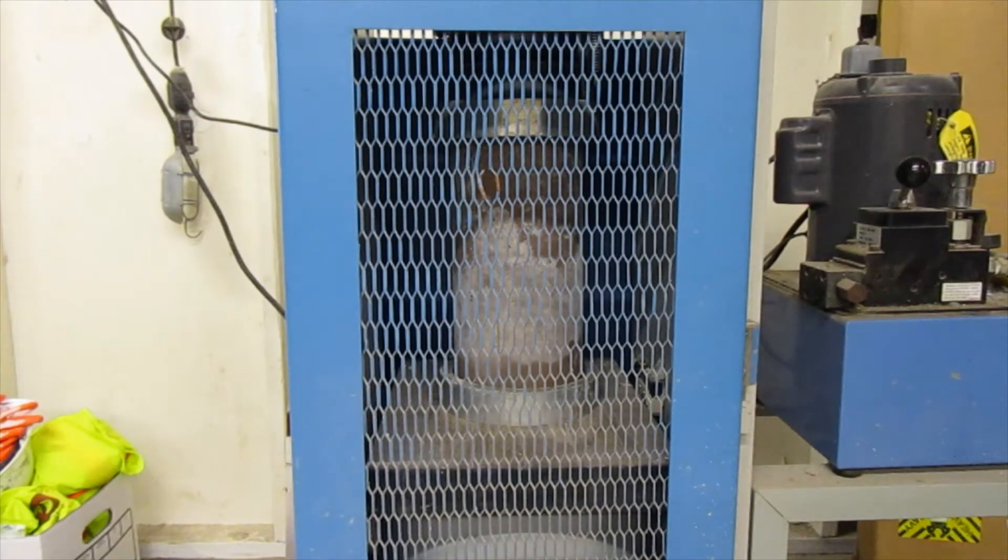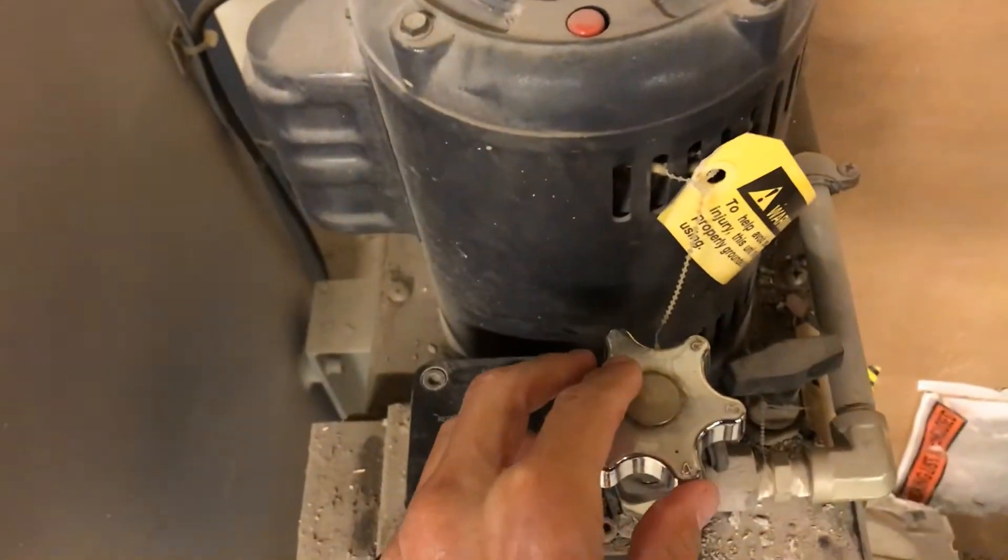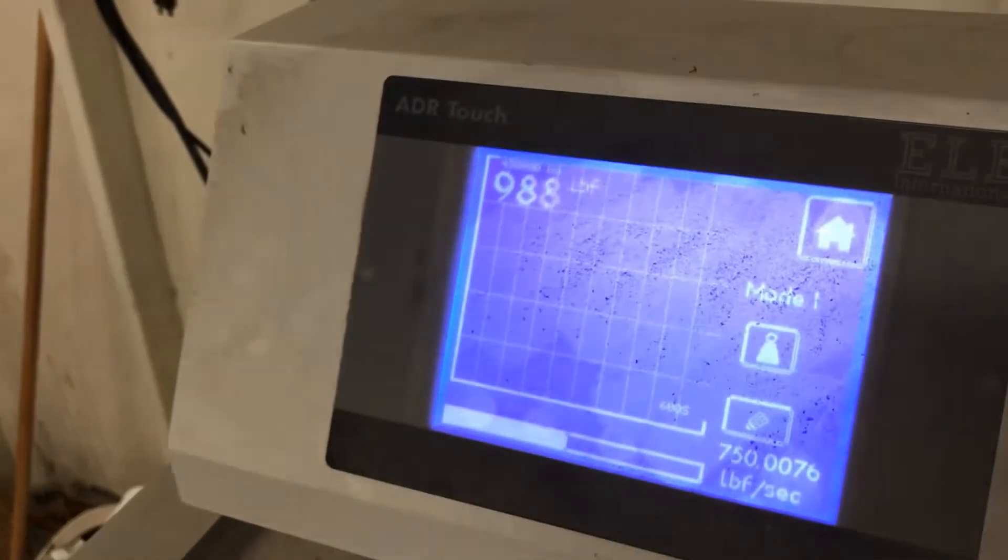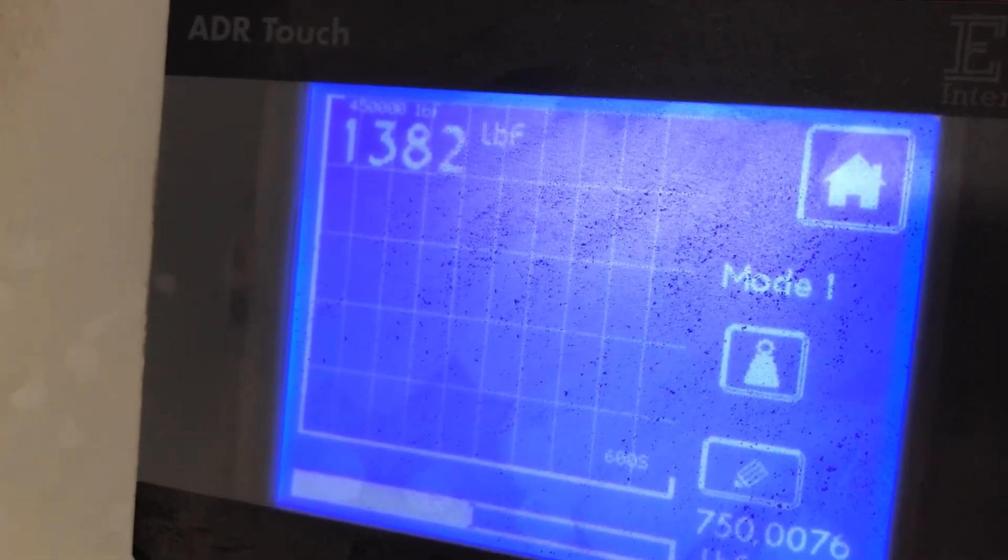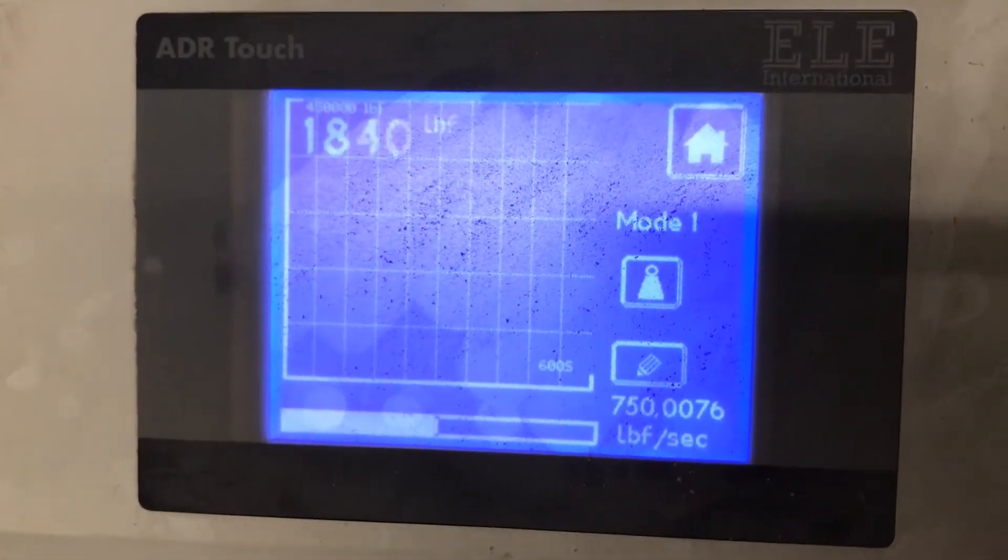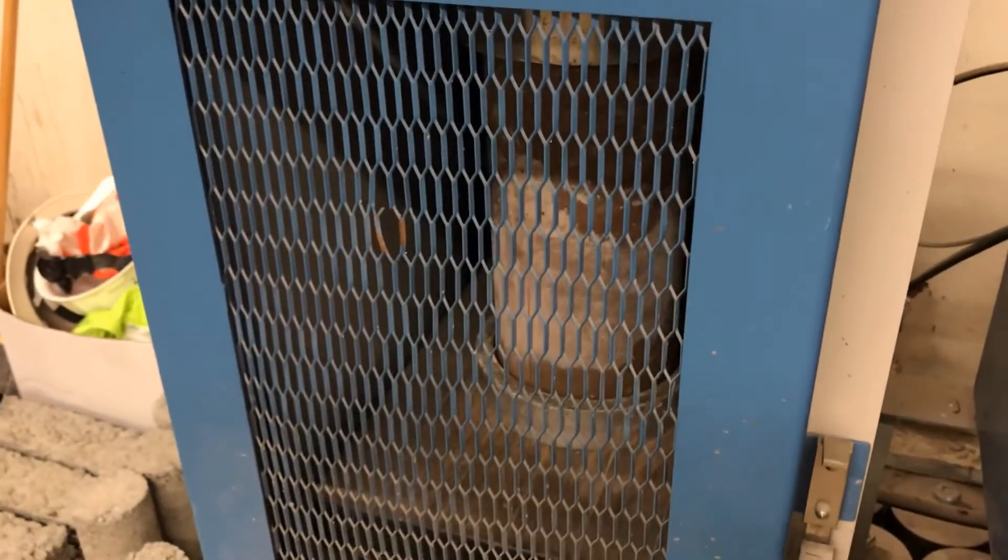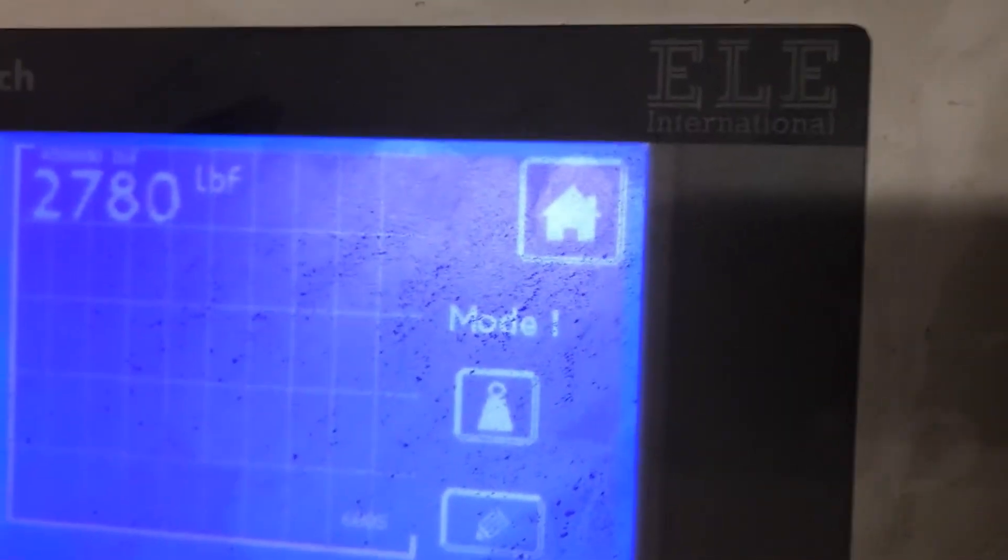Okay, so it's picking up load. Now let's look at the control panel. This is the metering valve right here. I can turn that to speed up the loading rate if I want.